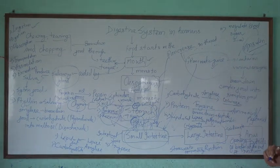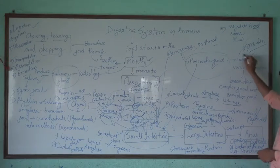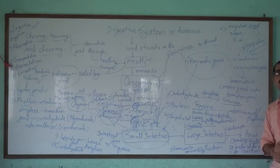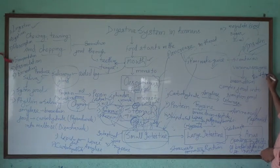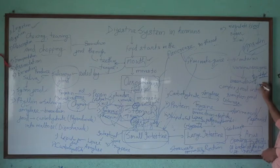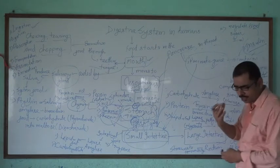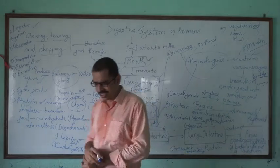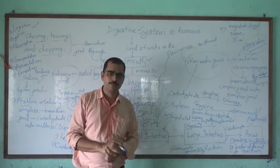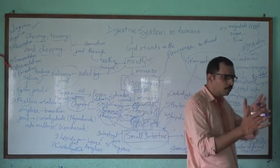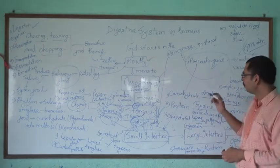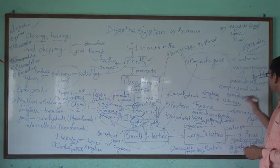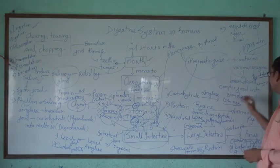Now this is one part. Pancreatic juice contains various types of enzymes. We know that enzymes are bio-catalysts. Bio means living or life, so they are living catalysts. Catalysts are entities which will increase or decrease the rate of reaction. With the action of these enzymes they are called bio-catalysts.